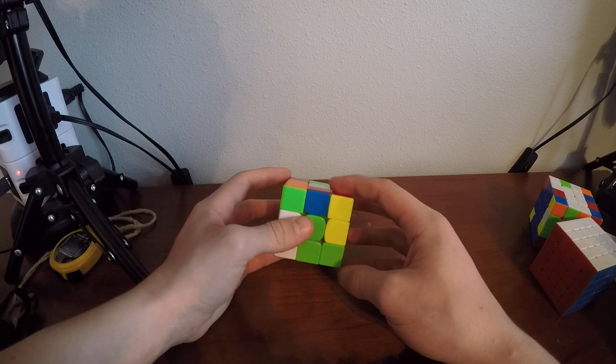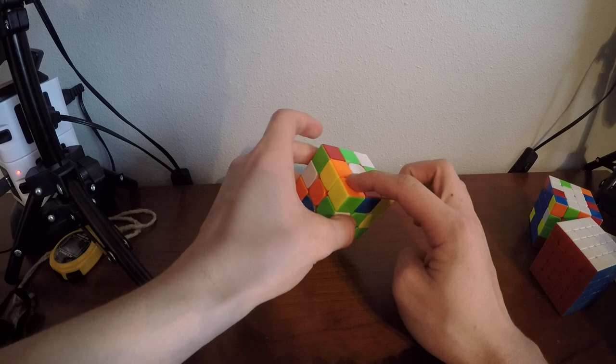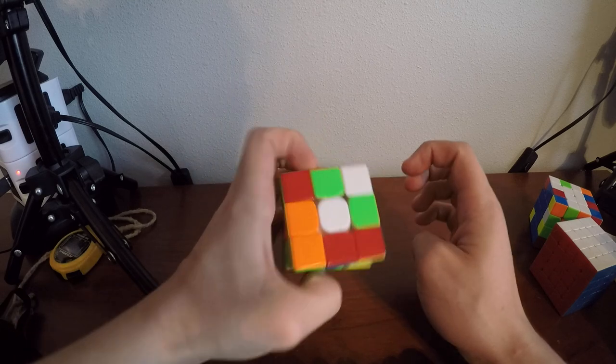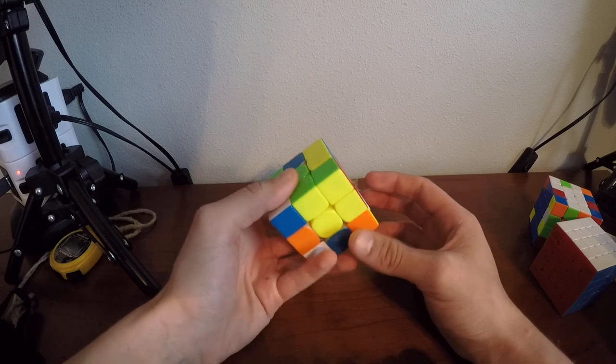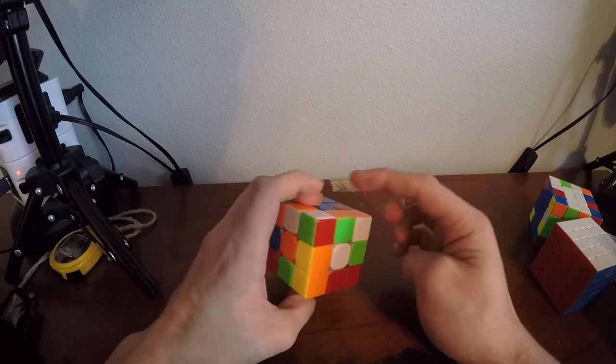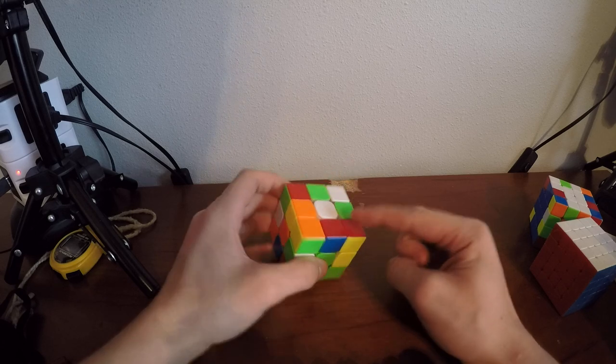A cool little 3BLD trick for when you're really fast: if you end on your buffer sticker, the white part, then you know there's no twists, or there's a two-twist. But I just did six targets, so right when you hit there, you know there's no twists. I feel like it's more helpful for edges.